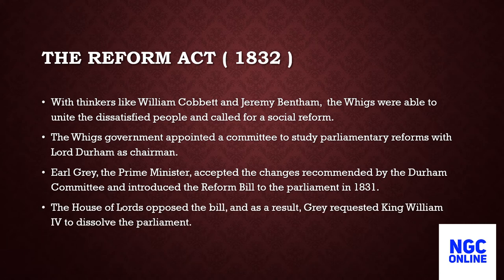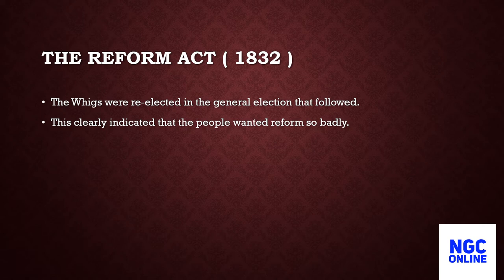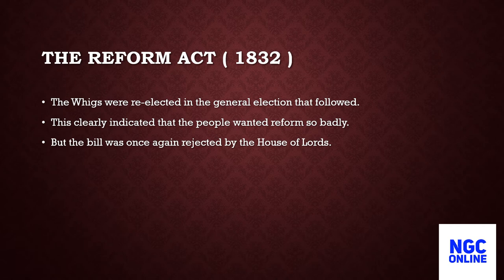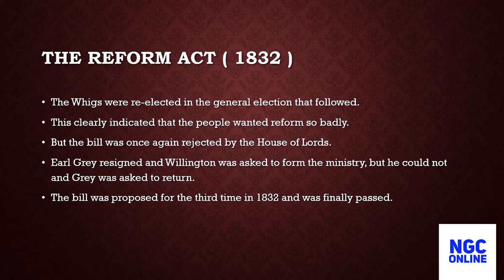The House of Lords opposed the bill, and as a result Grey requested King William IV to dissolve the Parliament. The Whigs were re-elected in the general election that followed, which clearly indicated that the people wanted reform so badly. But the bill was once again rejected by the House of Lords. Earl Grey resigned and Wellington was asked to form the Ministry, but he could not, and Grey was asked to return. The bill was proposed for the third time in 1832 and was finally passed.